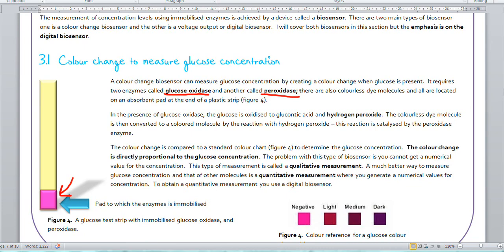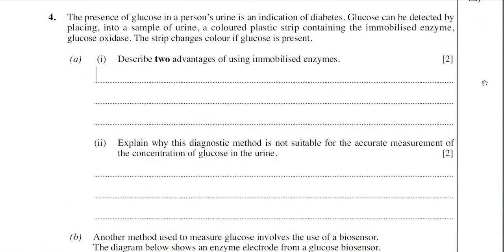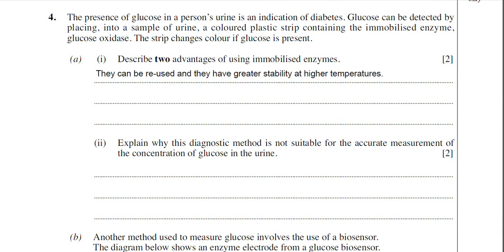Going back to the exam question, it starts off for two marks. You'll always be asked to describe two advantages of using immobilised enzymes. All you have to do is commit to memory several advantages. They can be reused, and they have greater stability — they're more resistant to higher temperatures and extremes of pH. So I've put in: they can be reused, and they have greater stability at higher temperatures.